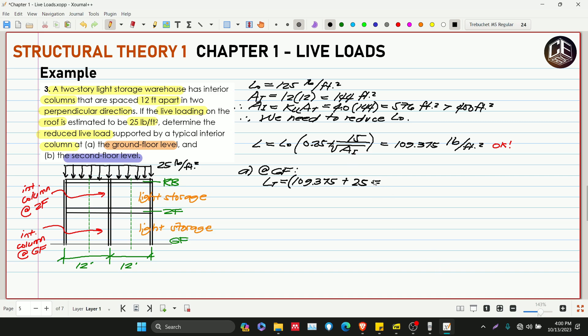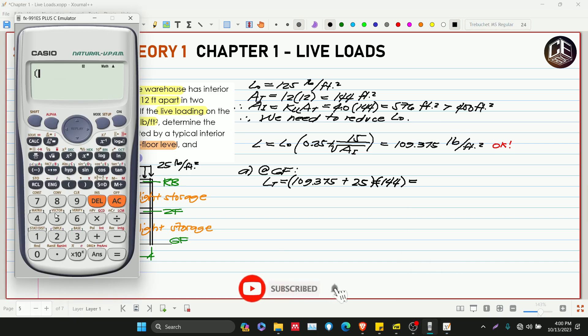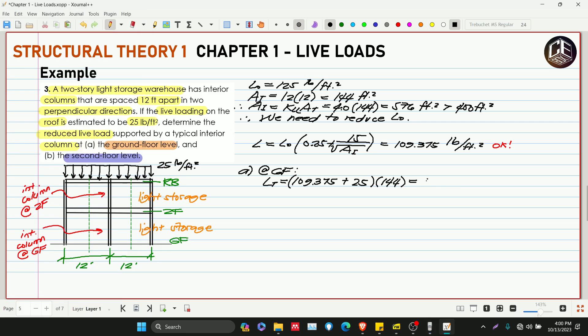I-multiply na rin natin sa ating tributary area which is equivalent sa 144. So 9,350, divide na natin ng 1,000 para kips na lang. Depende naman sa professor nyo kung ano yung pinapapuha nyo na unit. So para mas madali na lang isulat, divide na natin ng 1,000 para maging kips, pero kung pounds ang gusto ng professor nyo, huwag nyo lang i-divide. So this is 19.35 kips.